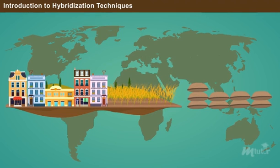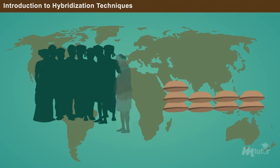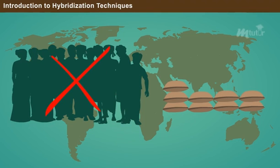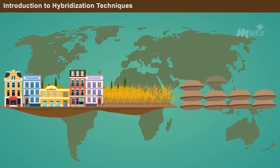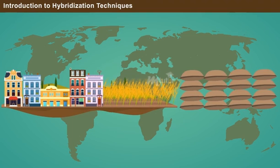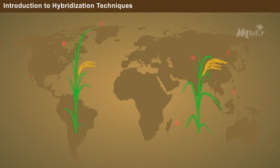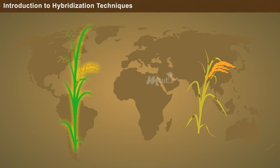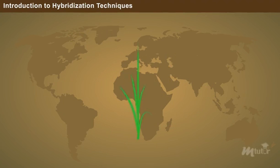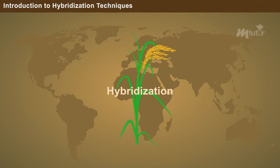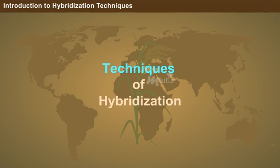There are only two possible ways: one is to decrease the population, which is extremely difficult; the other is to improve and increase food production through available technology advancements. For example, producing high-quality seeds that are superior to the parent. This is possible by inducing desirable characteristics into an existing variety so as to overcome its defects or weaknesses. Technically, this process is known as hybridization, which we will be discussing in detail in this lesson.